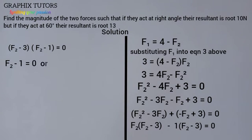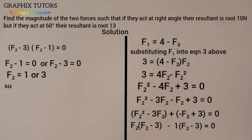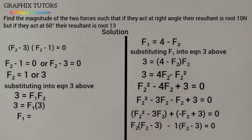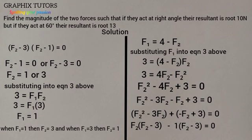So F2 = 1 or F2 = 3. Substituting into Equation 3 (F1·F2 = 3): if F2 = 1 then F1 = 3, and if F2 = 3 then F1 = 1. So the two forces are F1 = 1 and F2 = 3. If you found this video helpful please don't forget to click on the subscribe button.